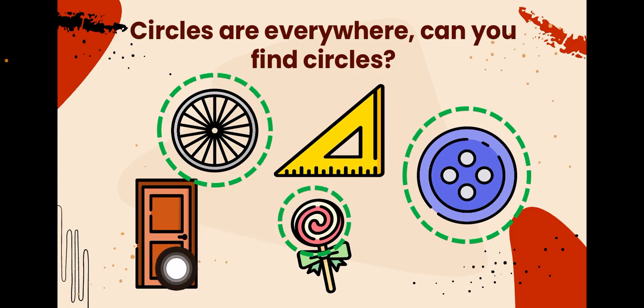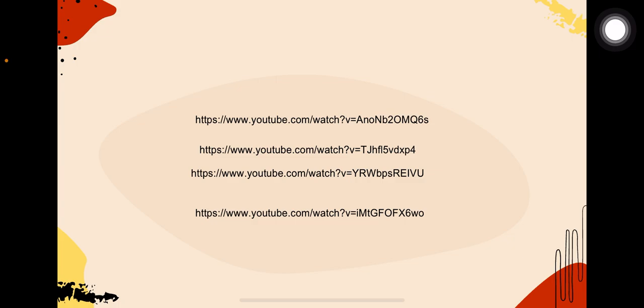You see those two? This door, it's not a circle shape. It doesn't look like a circle. And that triangle, it's not like a circle. So, now you understand the circle shape.